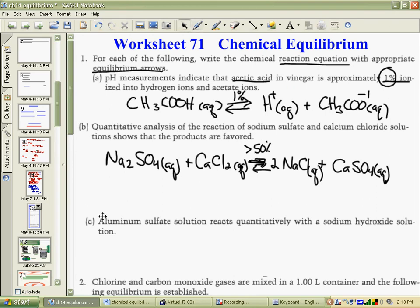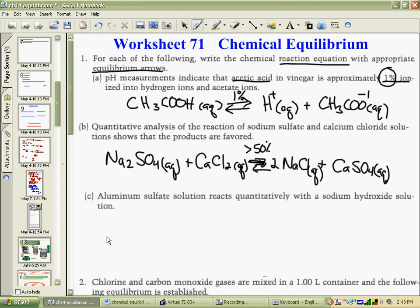Part C, aluminum sulfate. Aluminum is a plus 3 ion. Sulfate is a minus 2. So aluminum sulfate reacts quantitatively with sodium hydroxide. And if it reacts quantitatively, then that means that it goes to completion, meaning that it is completely consumed. The reactants, or reagents, and the products are all that you would find. And so you would have aluminum hydroxide and sodium sulfate.